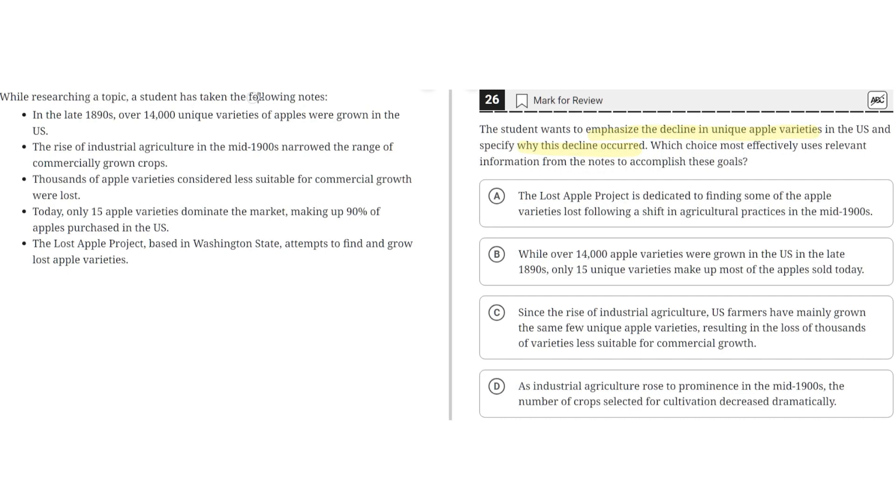While researching a topic, a student has taken the following notes. In the late 1890s, over 14,000 unique apple varieties were grown in the U.S. The rise of industrial agriculture in the mid-1900s narrowed the range of commercially grown crops. Thousands of apple varieties considered less suitable for commercial growth were lost.